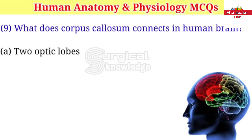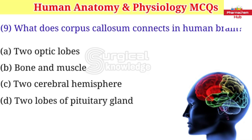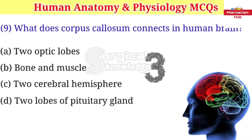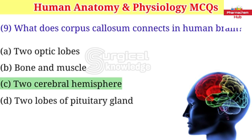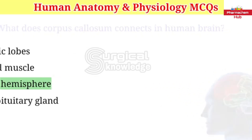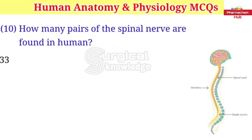What does corpus callosum connect in the human brain? A. Two optic lobes B. Bone and muscle C. Two cerebral hemispheres D. Two lobes of pituitary gland. Right answer is two cerebral hemispheres.